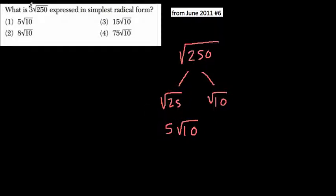But here, it's 3 times radical 250. So 3 times 5 square root of 10, which is 15 square root of 10, which is our answer here, choice 3.